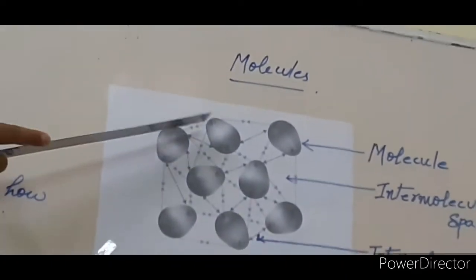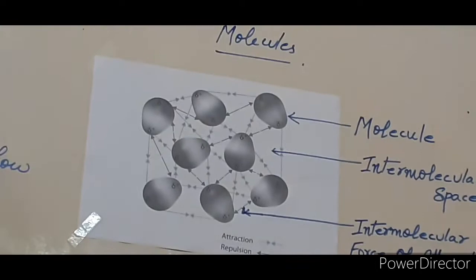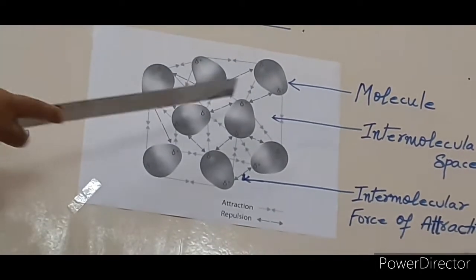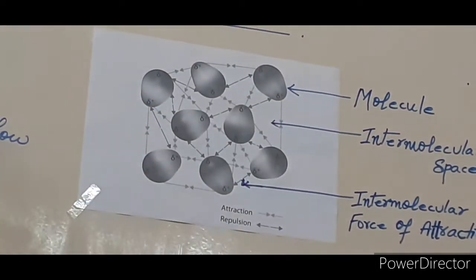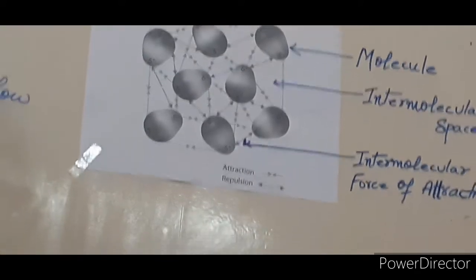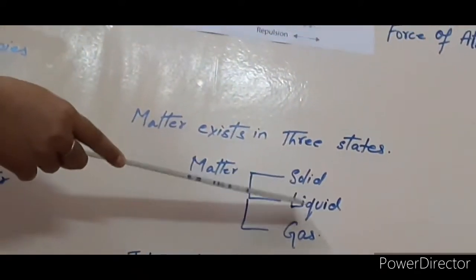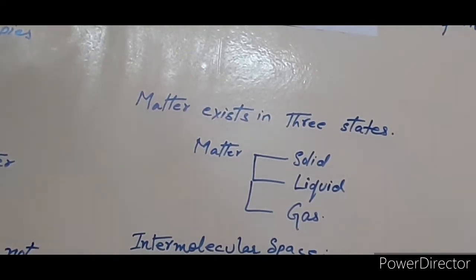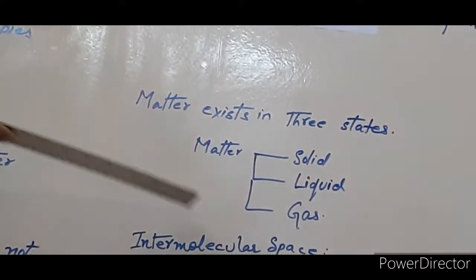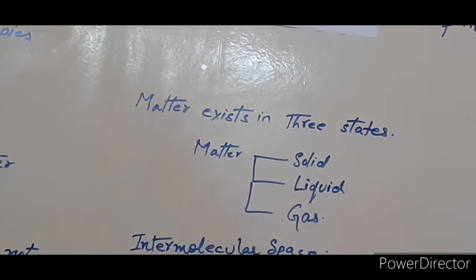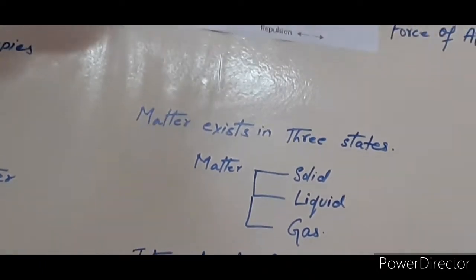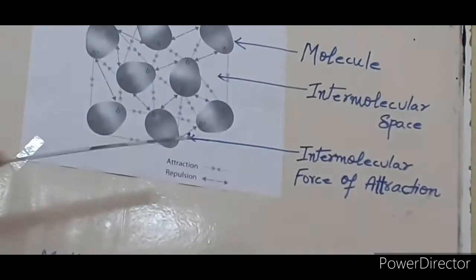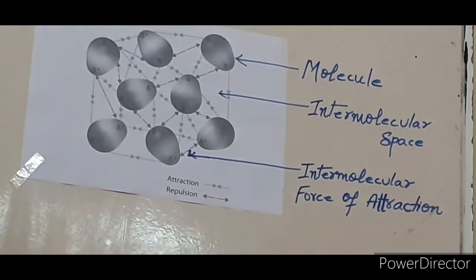Now, this is the molecular arrangement which can be seen under a microscope. Based on this molecular arrangement, matter can be classified into three states: solid, liquid and gas. But before going into the detailed description into the three states of matter, you should understand the concept of intermolecular space and intermolecular force of attraction.